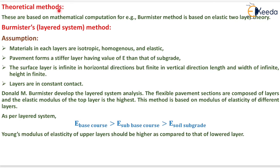Now the theoretical method for the flexible pavement design. These are based on mathematical computation. For example, Burmister method is based on elastic two layer theory. Now according to the Burmister layered system method the assumptions of this method is material in each layer are isotropic homogeneous and elastic. Pavement forms a stiffer layer having value of e than that of subgrade. The surface layer is infinite in horizontal direction but finite in vertical direction. It means that the length and width is infinite and height is finite. Layers are in constant contact.